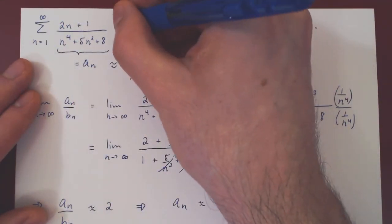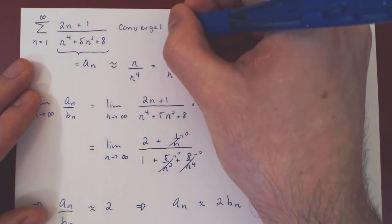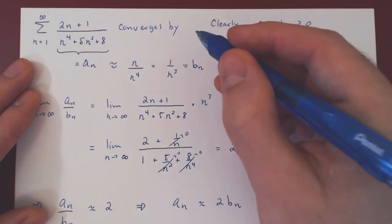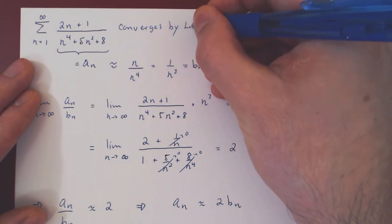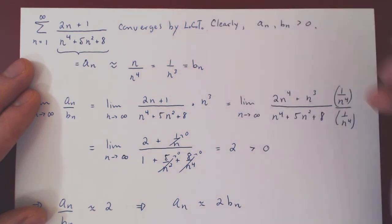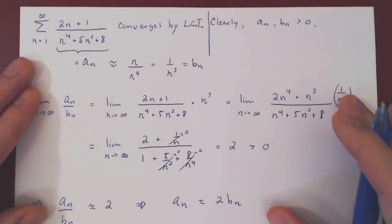So we can go back and say, well, this series converges by, and you don't have to write the limit comparison test. You can simply write LCT for limit comparison test. And that's it.